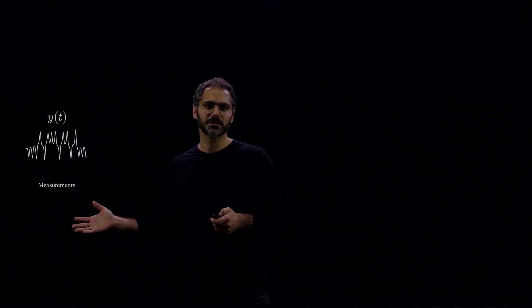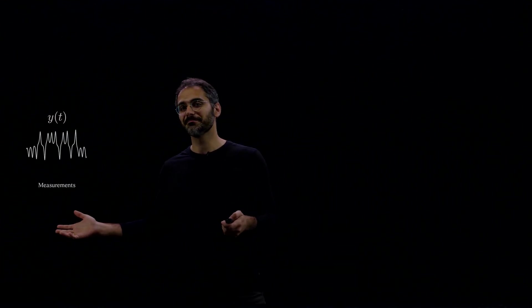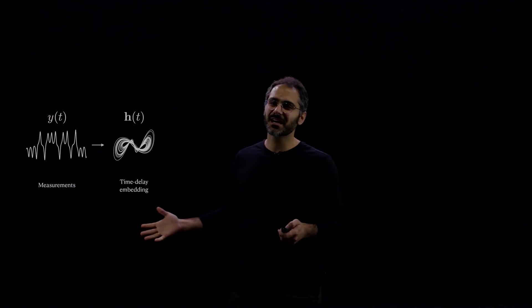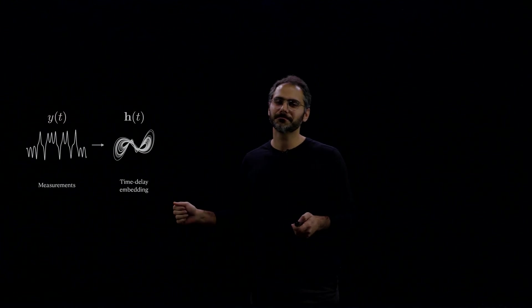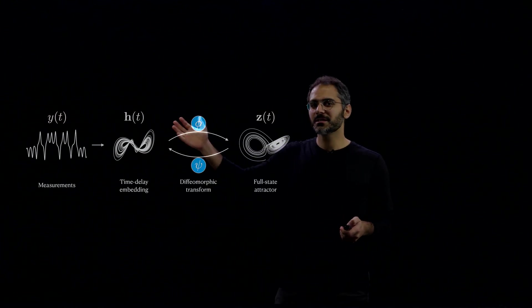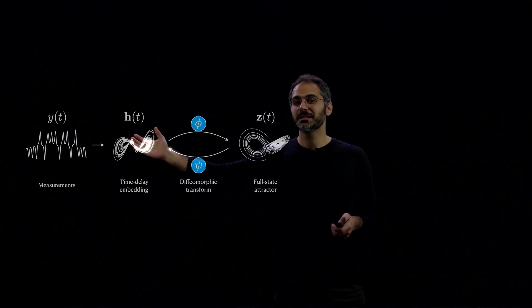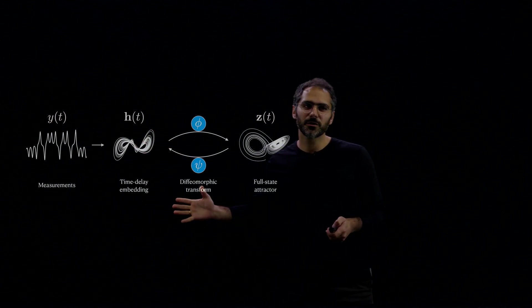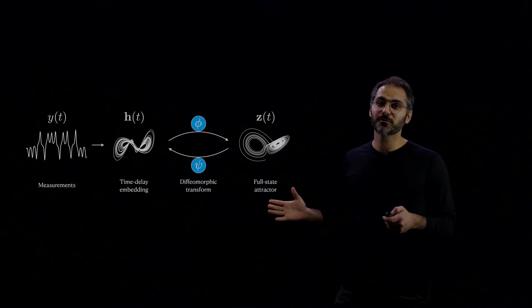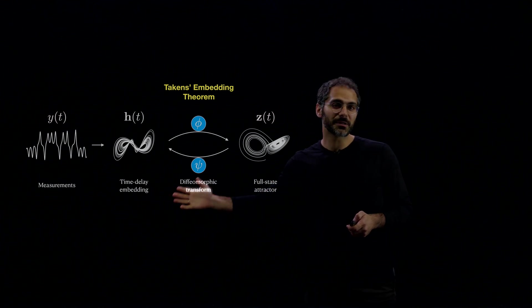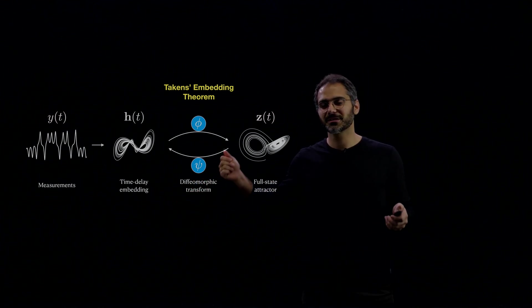The basic idea is you have some measurements, let's say one-dimensional measurements y(t), and you can embed these measurements in a higher-dimensional space by time-delay embedding. And we know that this time-delay embedding coordinates with time series h(t) is diffeomorphic to the original full-state dynamics z(t). We know that because there's a theorem that says it, Takens' embedding theorem.